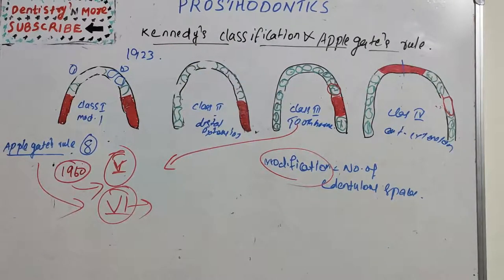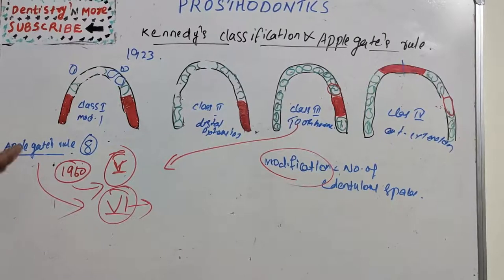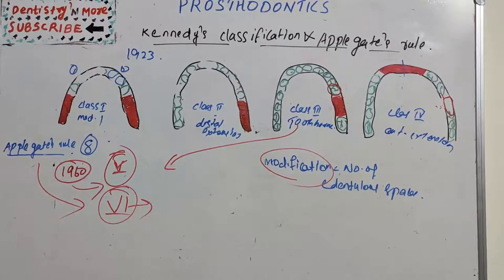We have 8 Applegate's rules and 6 Kennedy's classifications in total. That's all about Kennedy's classification and Applegate's rules. I will come up with a new topic in prosthodontics. Thank you.